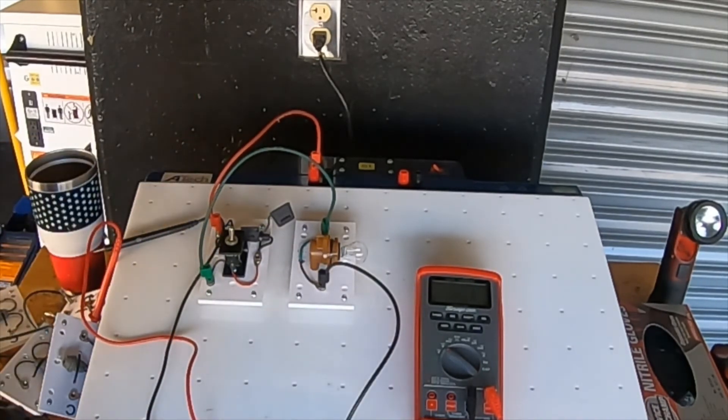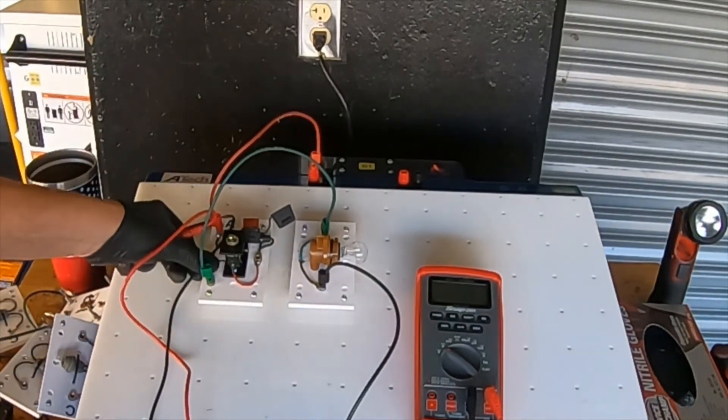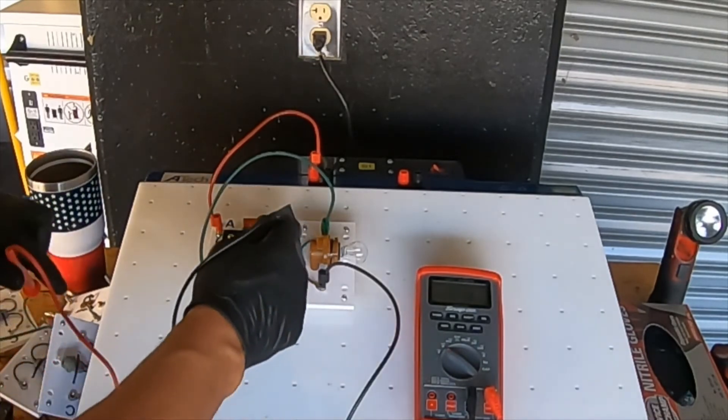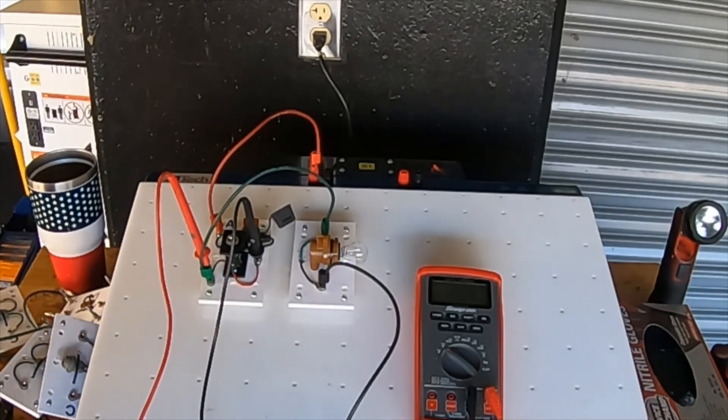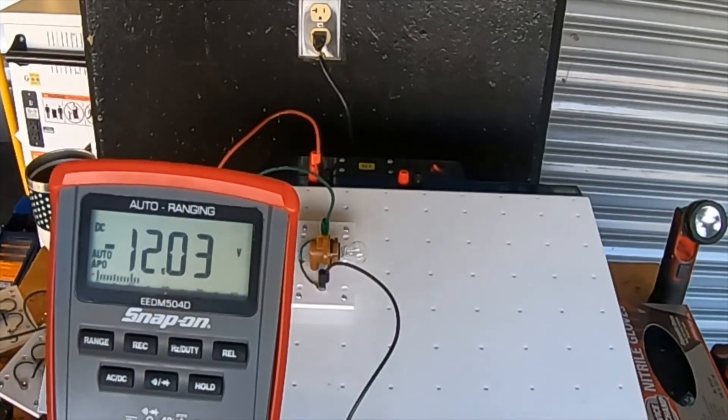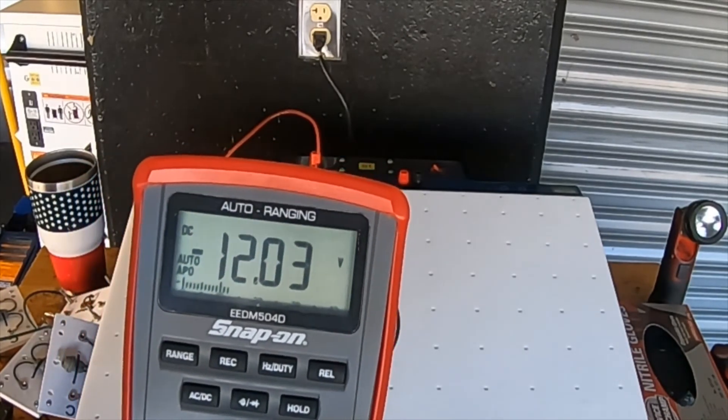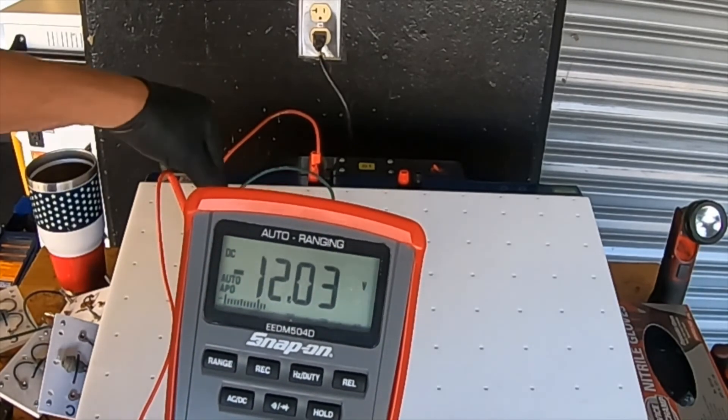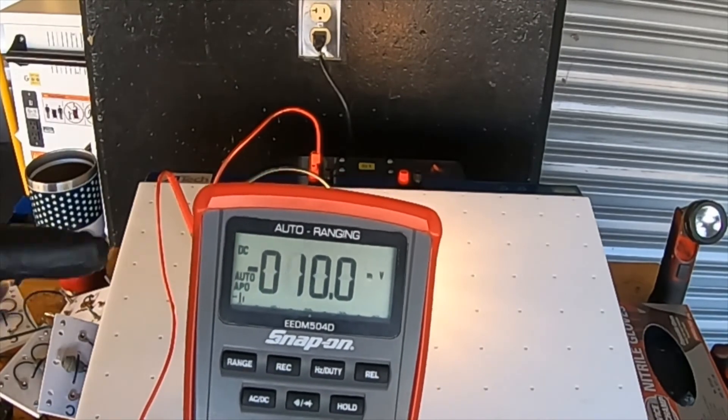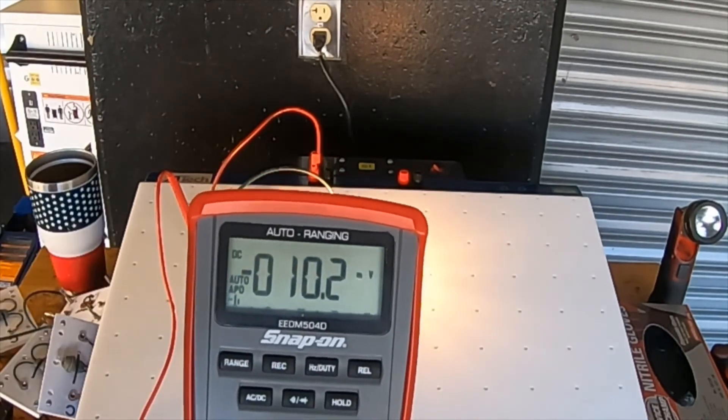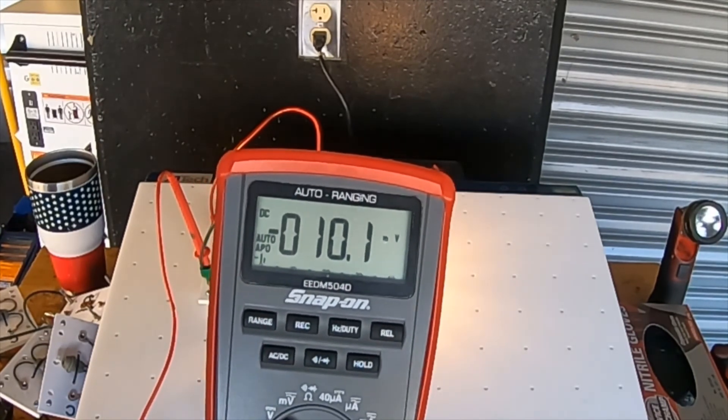The next measurement we can make is across a switch. The maximum voltage drop that we can have across the switch is 0.3 volts. If the switch measures 12 volts or source voltage, then either the switch is in the off position or the switch is faulty. So go ahead and flick the switch. In this case, it was in the off position. And you can see we're measuring 10 millivolts or 0.001 volts, which is well within the 0.3 volt window.